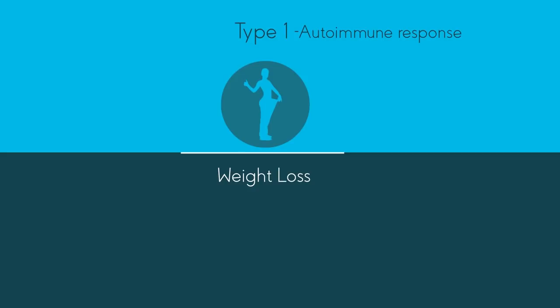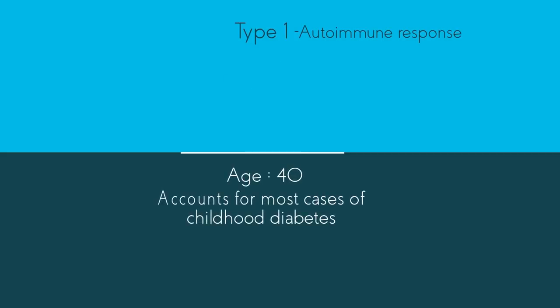Whilst type 1 diabetes can appear at any age, it usually appears before the age of 40, and type 1 accounts for most cases of childhood diabetes.